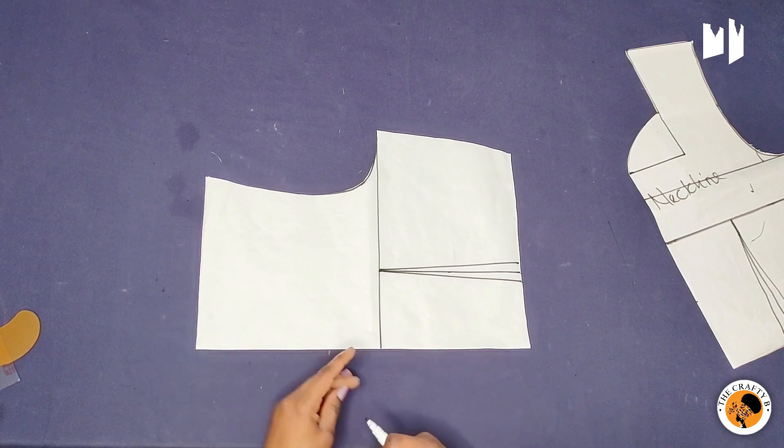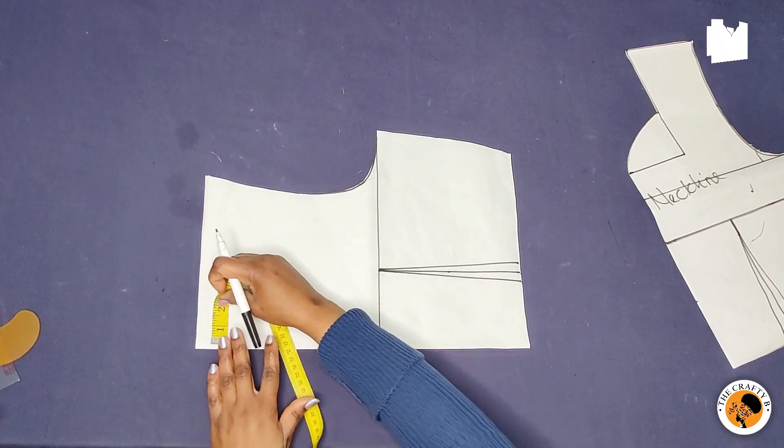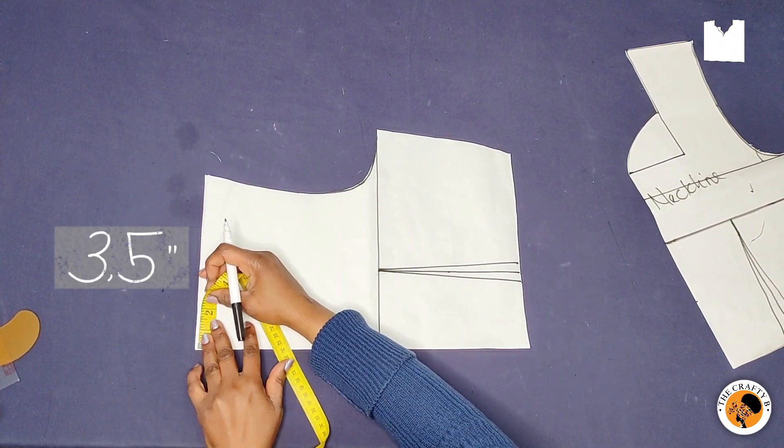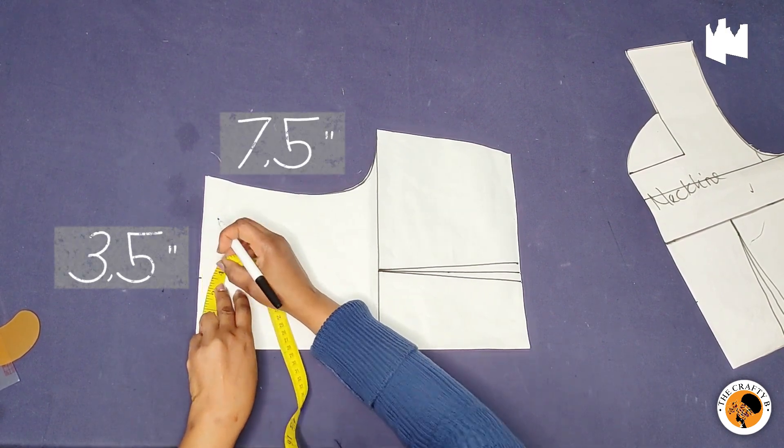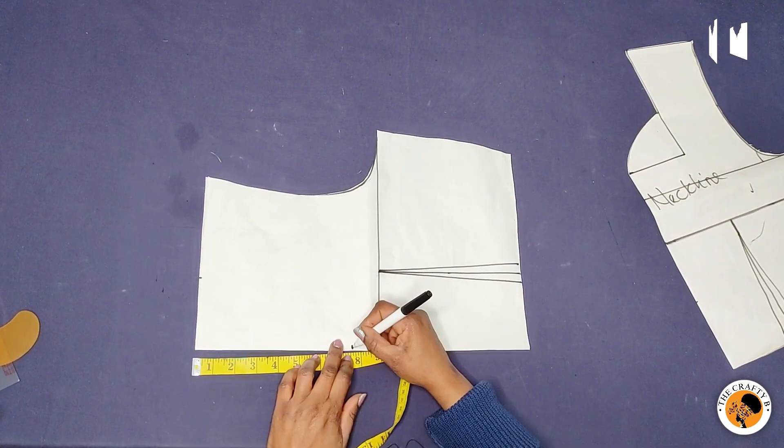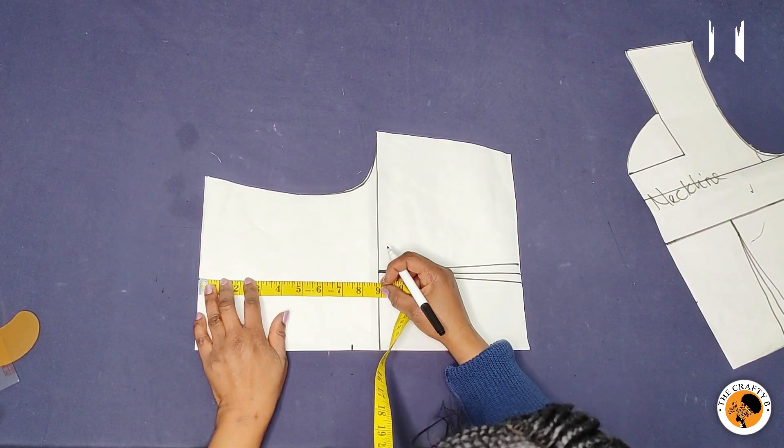So next we'll be cutting our scallop neckline. And to cut this neckline, we are going to take the wideness of three and a half inches and then the depth of seven and a half inches, and then we are going to square the lines together.